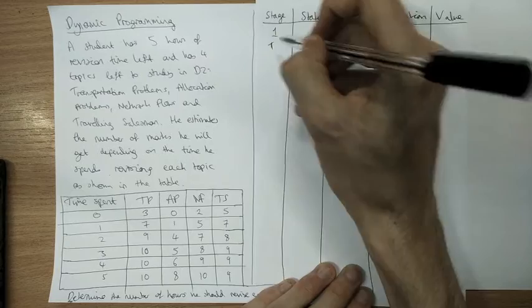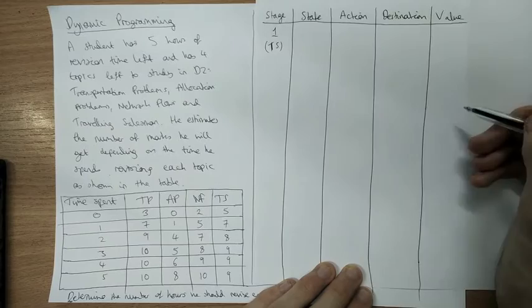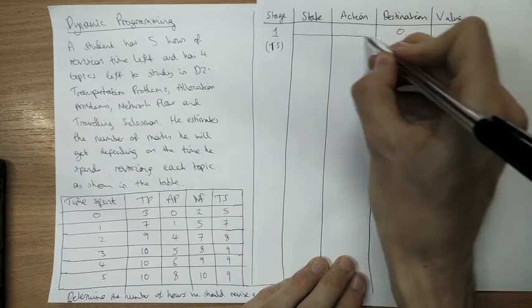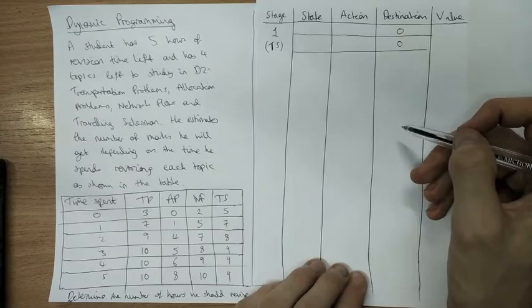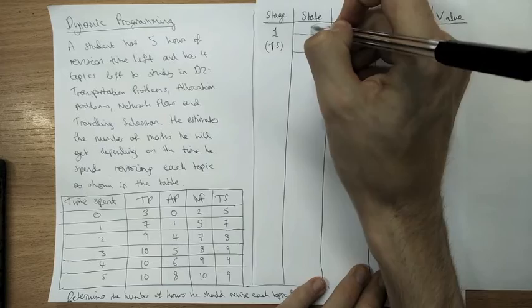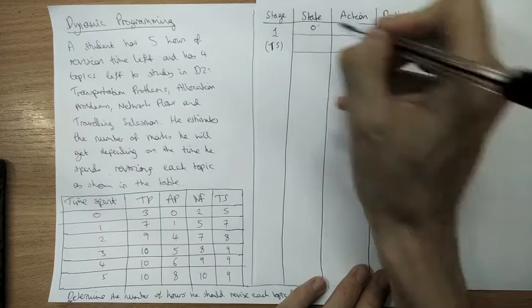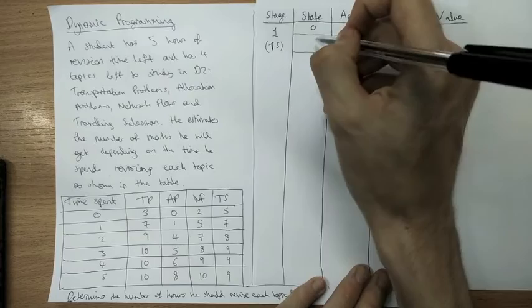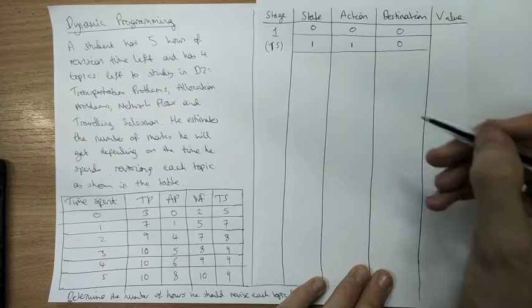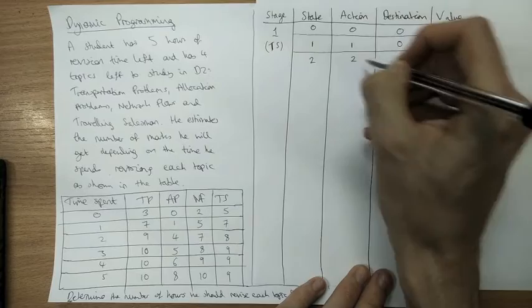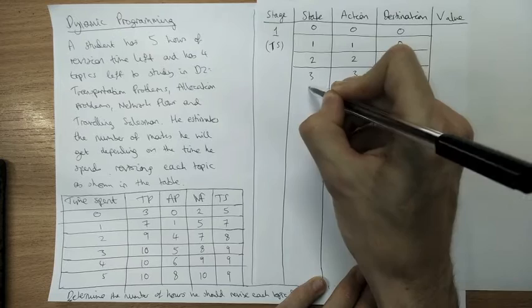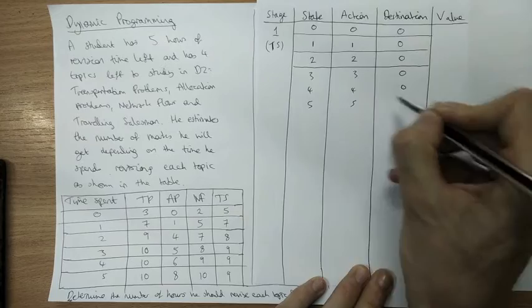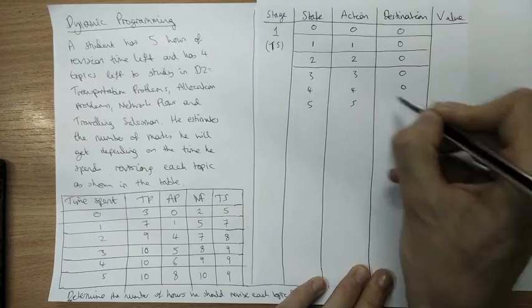The states and destinations represent the number of hours currently left to assign, and the destination is how many hours remain after assigning to each topic. Stages must be these different topics. Let's start with travelling salesman — it doesn't matter which direction we go. The destination must be zero, because we must end with no hours left. We could have nothing left for travelling salesman, or one left, or two, three, four, or even five hours left — and each of those becomes a possible starting state at that stage.